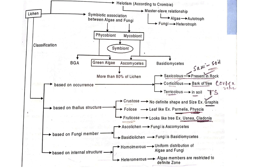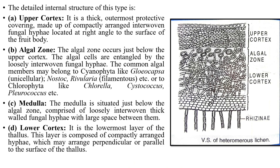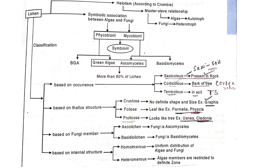Regarding the lichen relationship, according to scientist Crombie, the relationship is a master-slave relationship — because algae are autotrophs and produce their own food, while fungi have to depend on the algae for their nutrition.